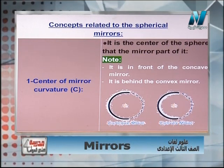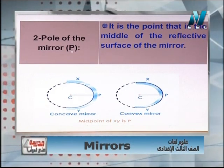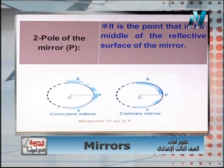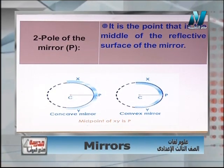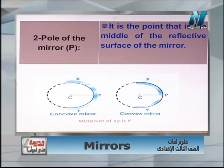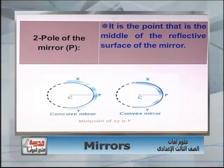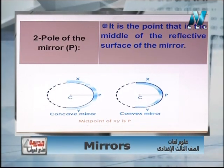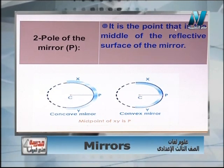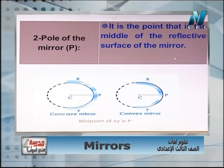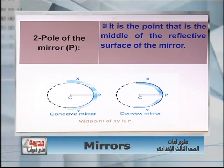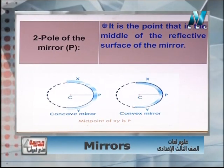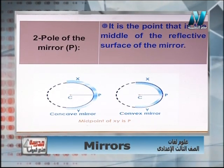Number two: the pole, symbol P. The pole is the midpoint on the reflecting surface of the mirror. As we see from the diagram, if the reflecting surface goes from point X to point Y, the midpoint on that surface is called the pole, or P. So if you are asked to define the pole of the mirror, the answer is: it is the point at the middle of the reflecting surface.